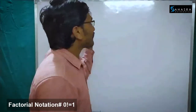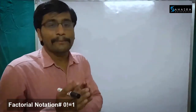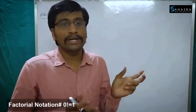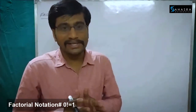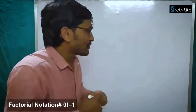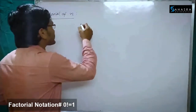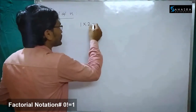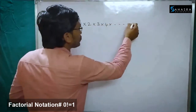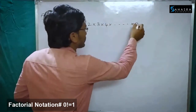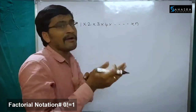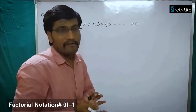Factorial of n is nothing but the product of first n natural numbers. The product of first n natural numbers is called factorial of n. So product of first n natural numbers is nothing but 1 into 2 into 3 into 4 into and so on into n. This is nothing but the product of first n natural numbers, called factorial of n.